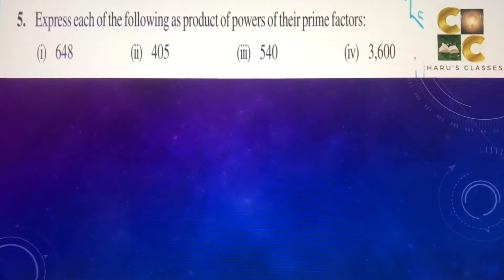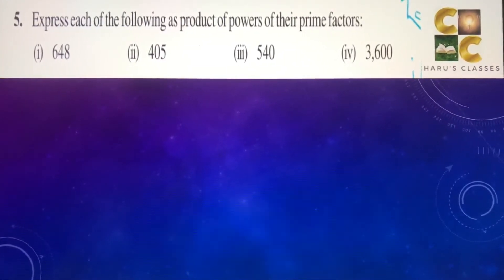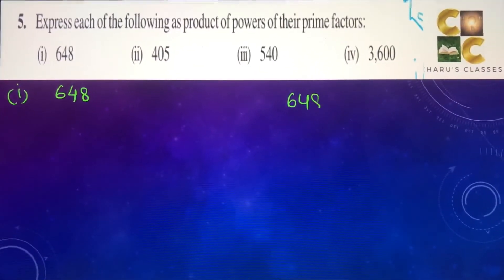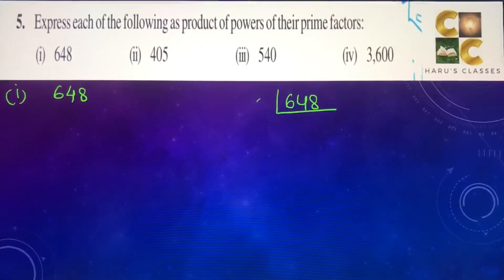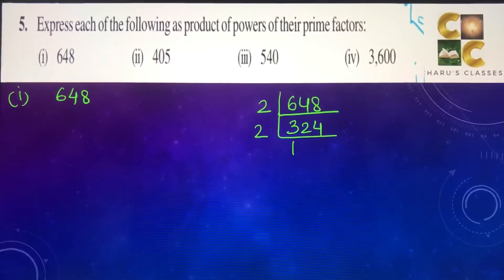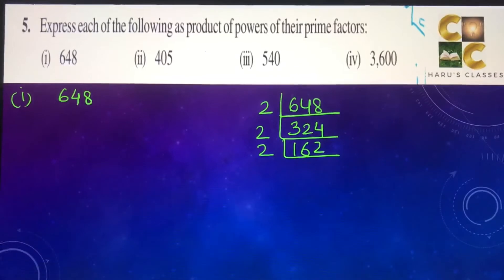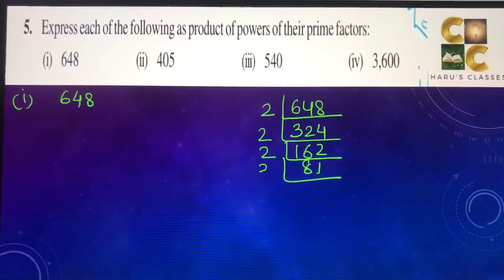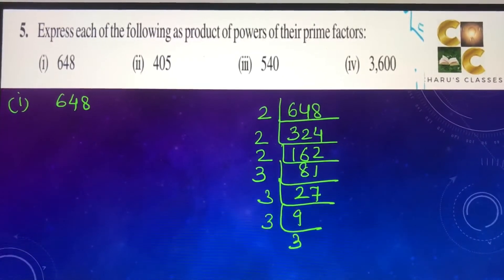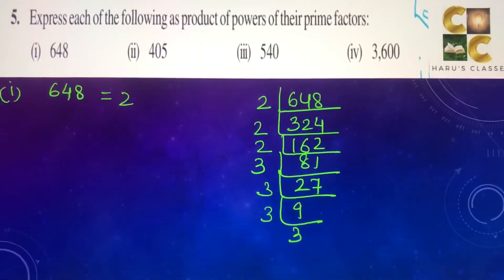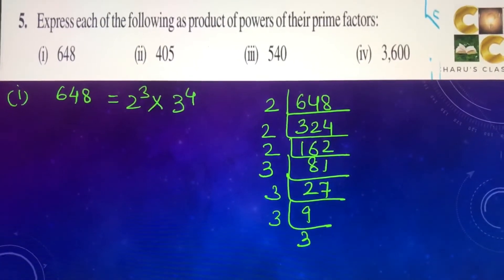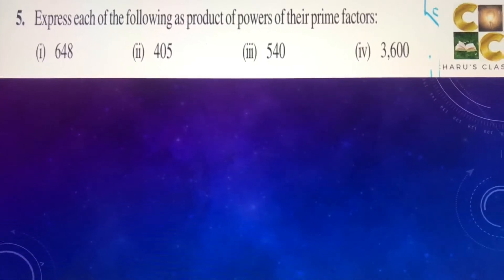Question number 5: express each of the following products as powers of their prime factors. First part is 648. We begin with 2: 324, 162, 81. Now we go to 3: 27, 9, 3, and 3. So 648 can be written as 2 to the power 3 multiplied by 3 to the power 4.